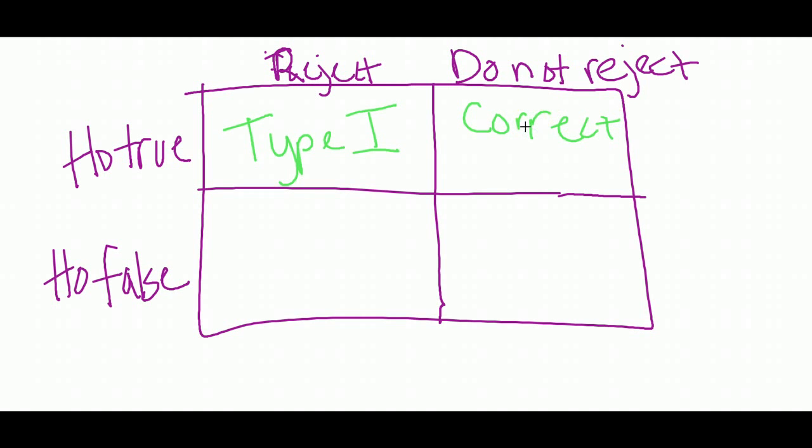Okay, so let's say you have a null hypothesis, but it's false, like there's something going on here. There's not the null going on, and you reject it. Another good decision. Correct.